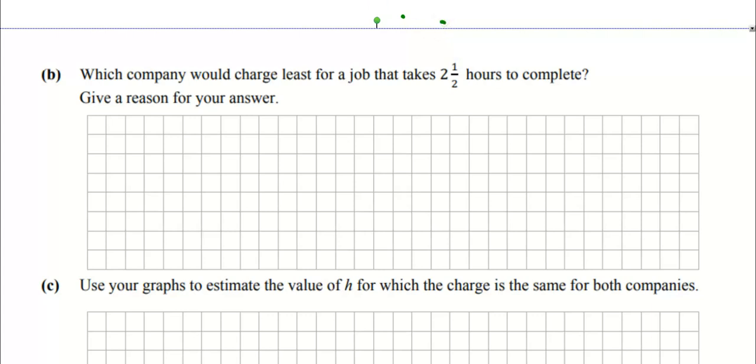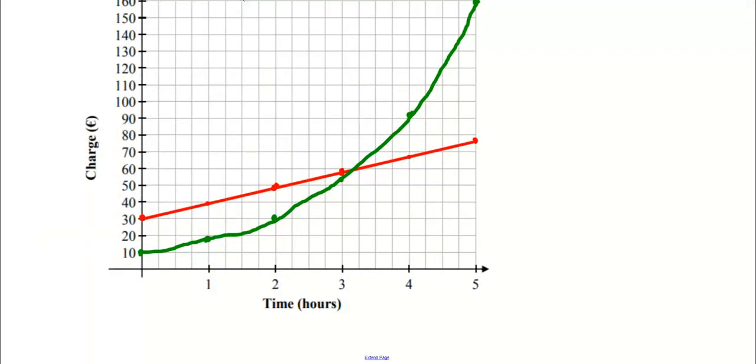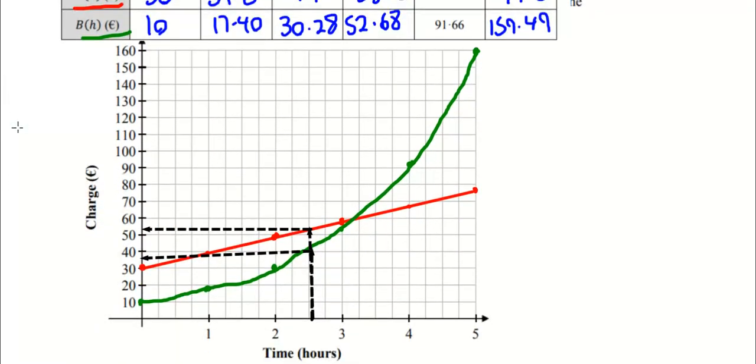Which company would charge least for a job that takes two and a half hours? Go to your graph, go to two and a half hours. I use my graph, I estimate the green company, company B, will charge me close to 40 euro, while the red company will charge me 52 euro. Clearly I'll go with company B because according to the graph they'll charge me below 40 euro while company A will charge me above 50 euro.